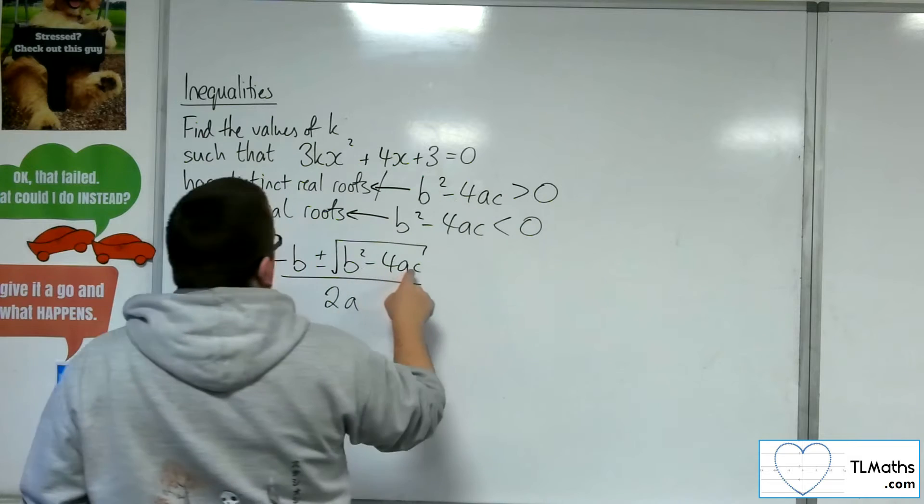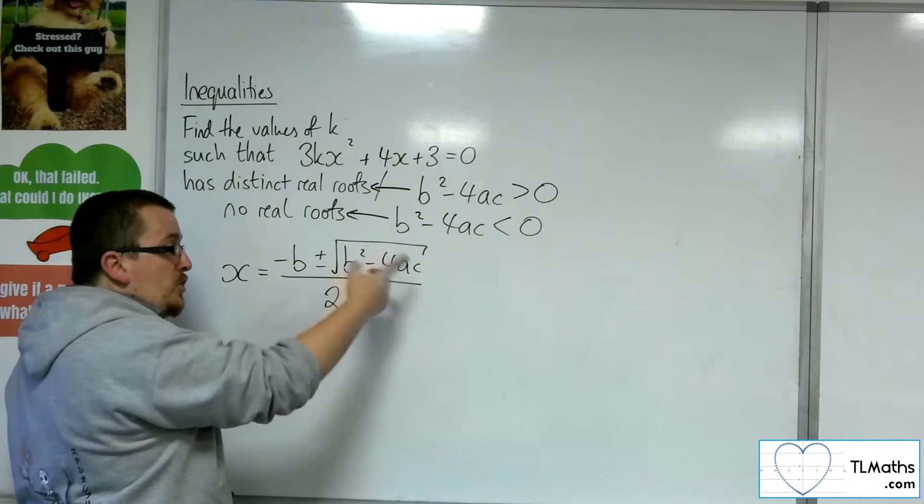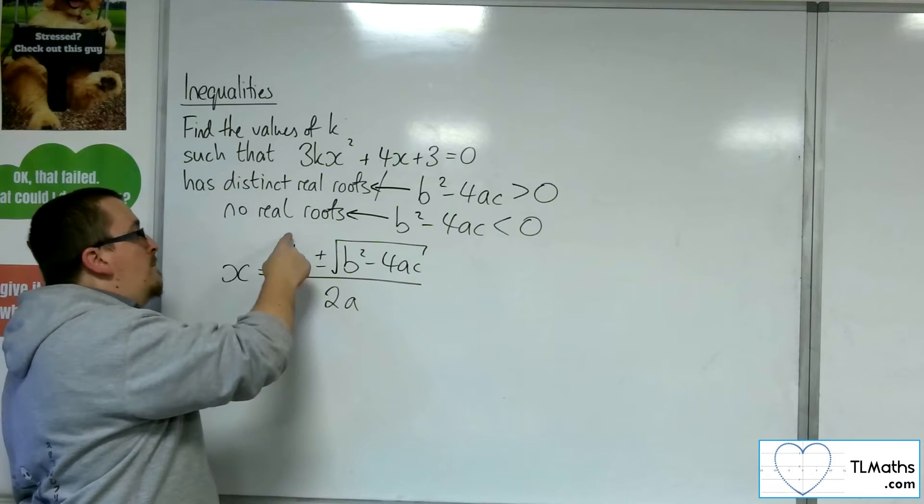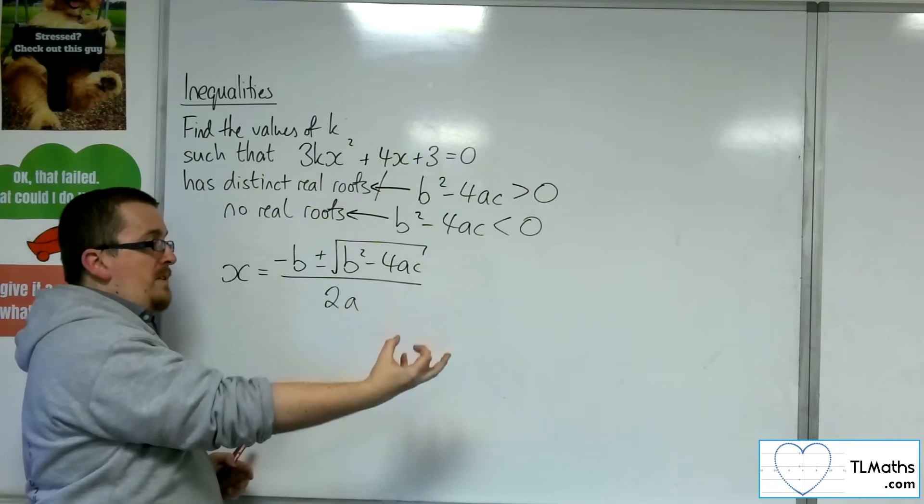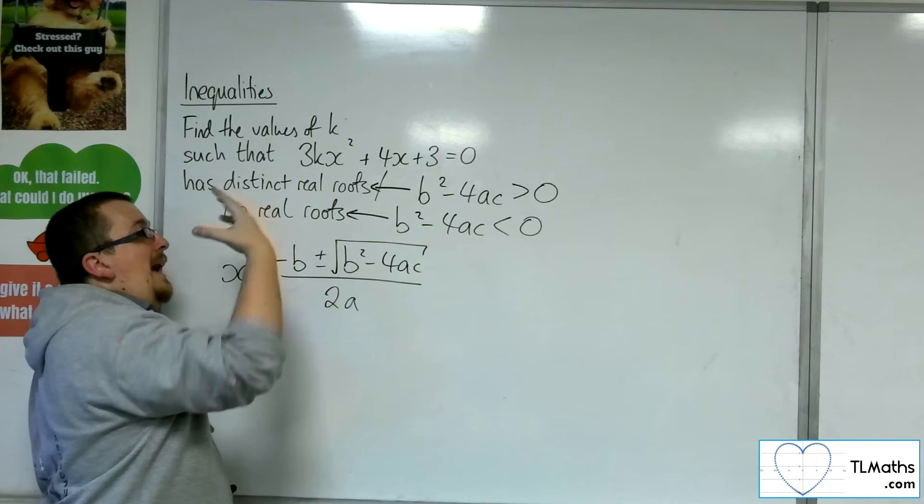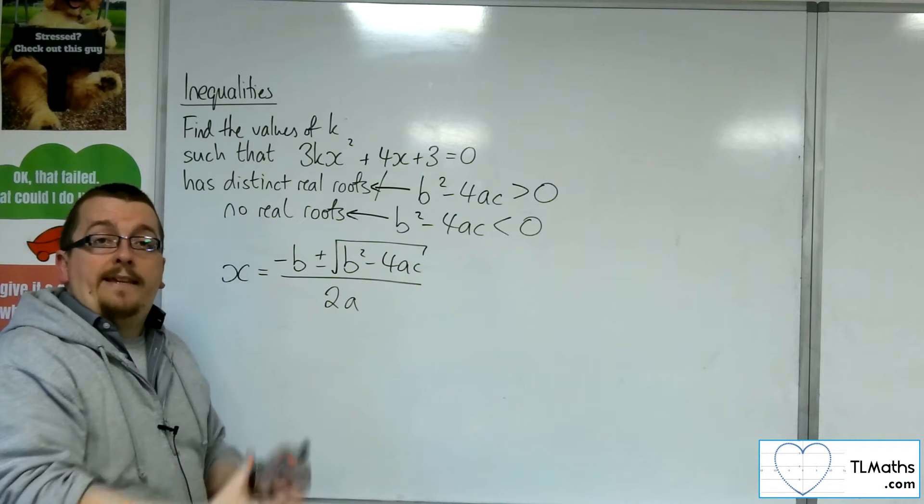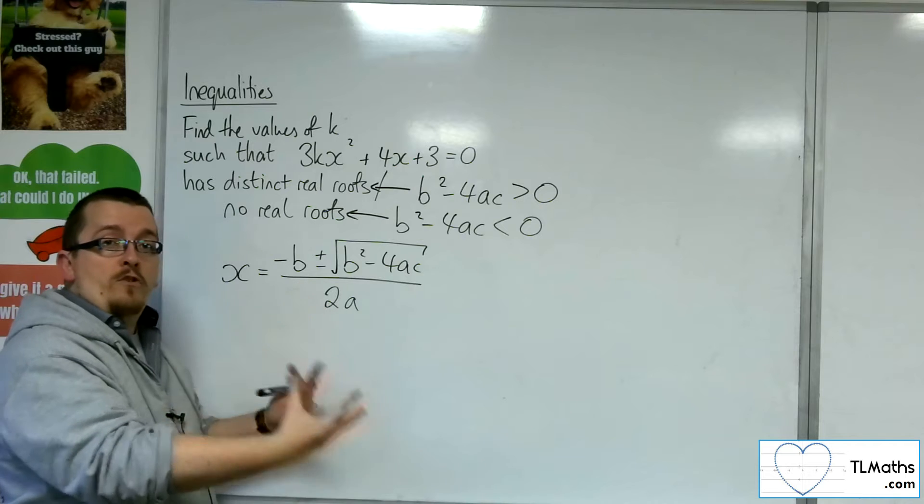If, however, the b squared minus 4ac is positive, I can square root a positive number, that's perfectly fine. So I'll have minus b plus something positive over 2a, and minus b take away something positive over 2a, giving me those two distinct real roots.